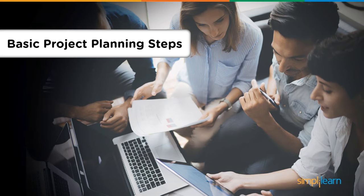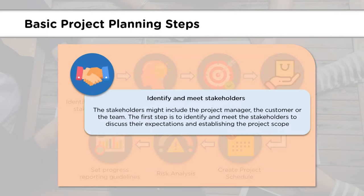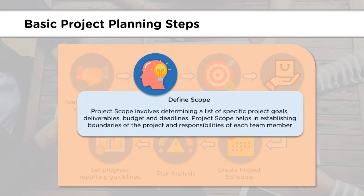Now that we know about different tools for project planning, let's look at the seven steps of project planning. The first step is identification of stakeholders. Stakeholders could be anybody — part of the team, a project manager, or a customer. When we identify stakeholders, we can find out the expectations and requirements to be addressed in this project. This gives us a clearer picture and helps in establishing the project scope. The next step is defining the project scope.